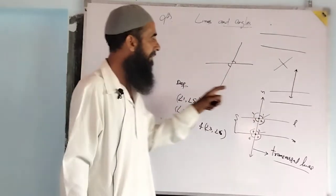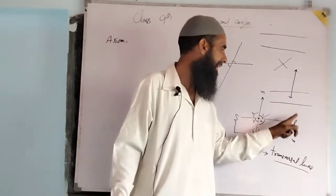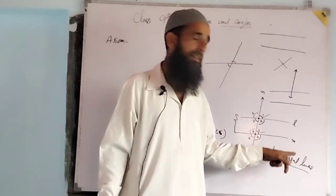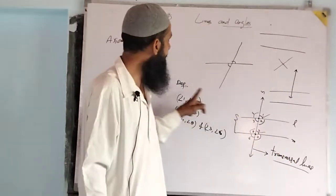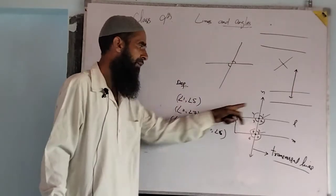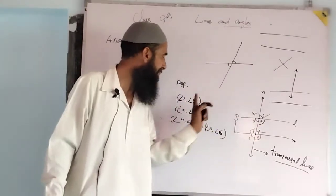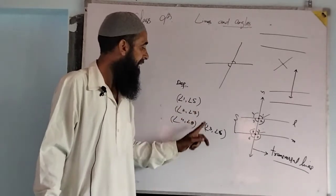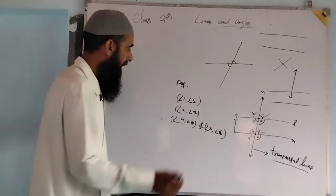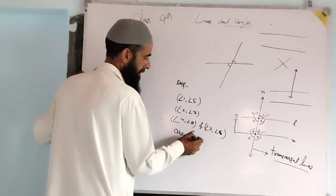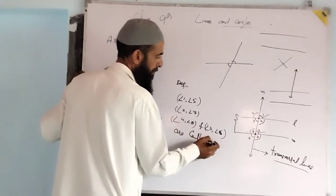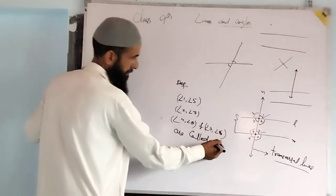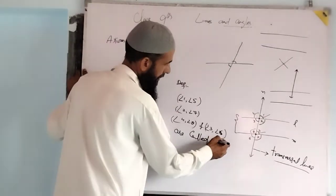If we have two parallel lines L and M in a plane, and N is the transversal, then these pairs — (1, 5), (2, 7), (4, 8), and (3, 6) — which we can see in the figure, are called corresponding angles.